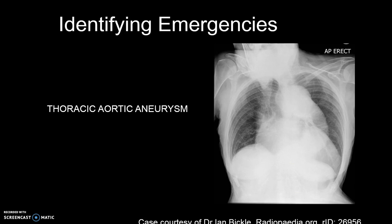A thoracic aortic aneurysm is an aortic aneurysm that presents primarily in the thorax — a ballooning of the upper aspect of the aorta above the diaphragm. Untreated or unrecognized, they can be fatal due to dissection or rupture of the aneurysm, leading to nearly instant death. Thoracic aneurysms are less common than the abdominal aortic aneurysm.